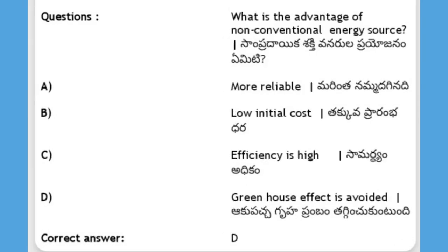What is the advantage of a non-conventional energy source? Options: more reliable, low initial cost, efficiency is high, greenhouse effect is avoided. The answer is D, greenhouse effect is avoided.